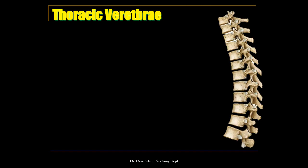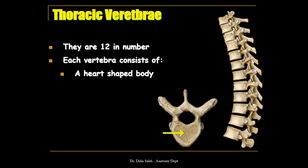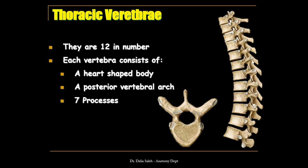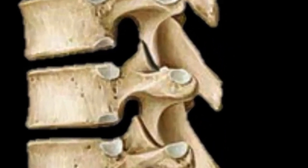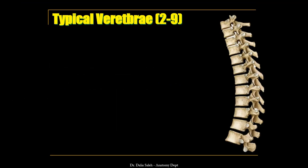Regarding the thoracic vertebrae, this is a side view of the twelve thoracic vertebrae that form the posterior skeleton of the thoracic cage. They are 12 in number. Each vertebra consists of a heart-shaped body in front, which is the weight-bearing area of the vertebral column, and a posterior vertebral arch made by the two pedicles and the two laminae. There are seven extensions or processes: the spinous process directed backwards, two transverse processes directed laterally, and four articular processes — two superior and two inferior — for articulation with adjacent thoracic vertebrae.